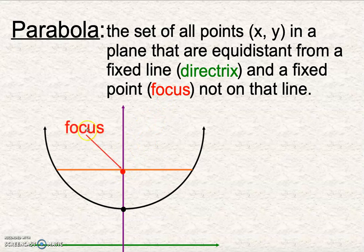So again, this red point is the focus. This green line is the directrix. And the parabola in this picture is this black shape right here, and every single point on that parabola is the same distance from the red as it is from the green.